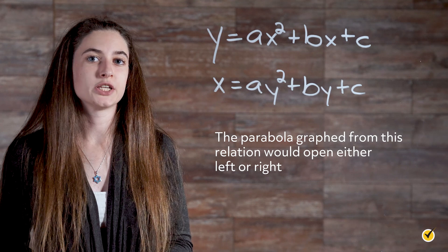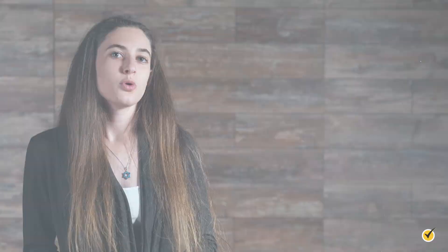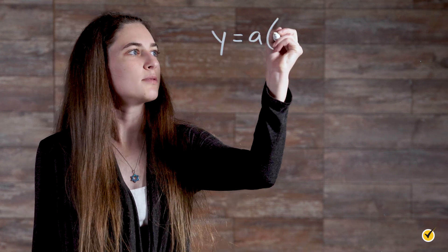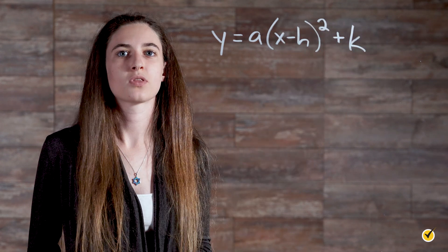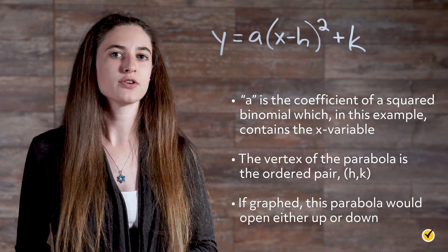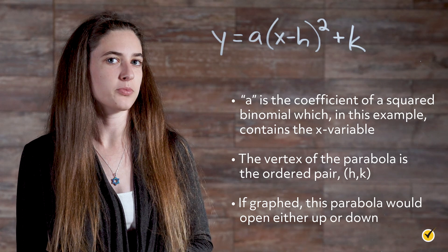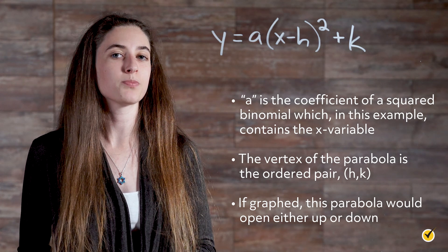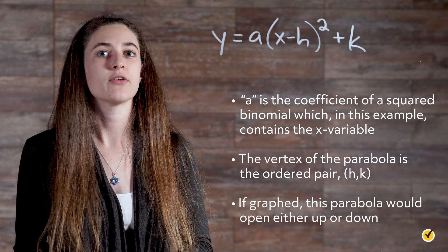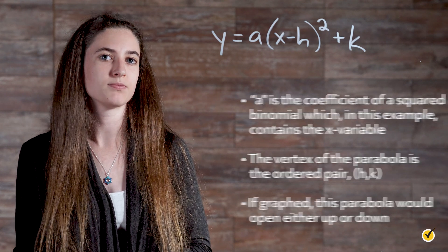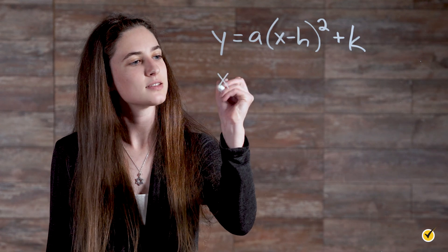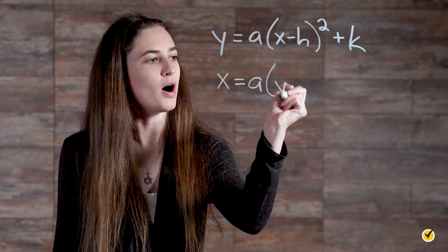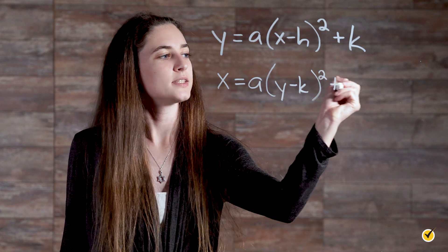The parabola graphed from this relation would open either left or right. A quadratic in vertex form is written as y equals a times (x minus h) squared plus k, where a is the coefficient of the squared binomial containing the x variable, and the vertex of the parabola is the ordered pair h, k. If graphed, this parabola would open either up or down. The equation for a left or right opening parabola in vertex form would be written as x equals a times (y minus k) squared plus h.